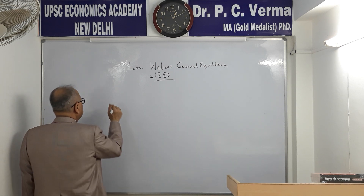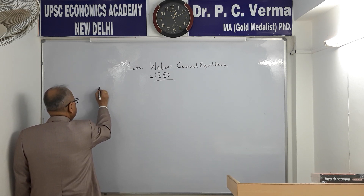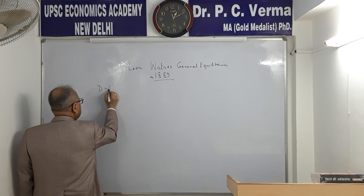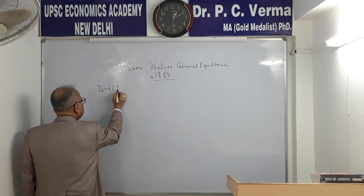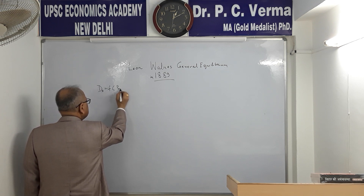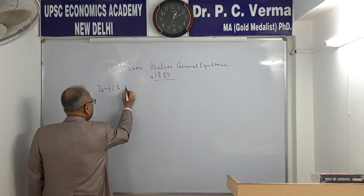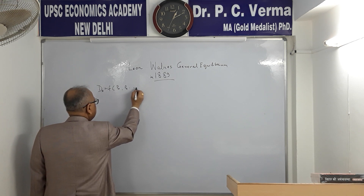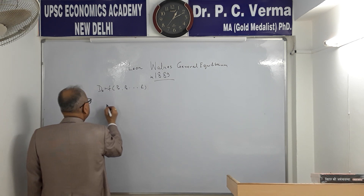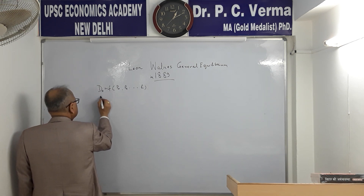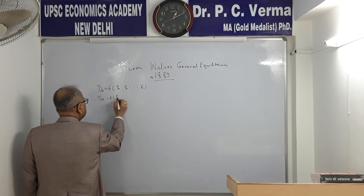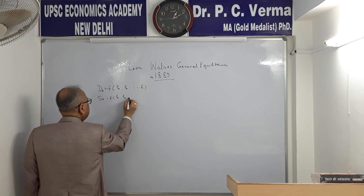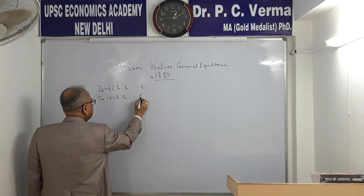Walras develops general equilibrium and says that demand for A is a function of price of A, price of B, and price of N. Supply of A is also a function of price of A, price of B, and price of N.